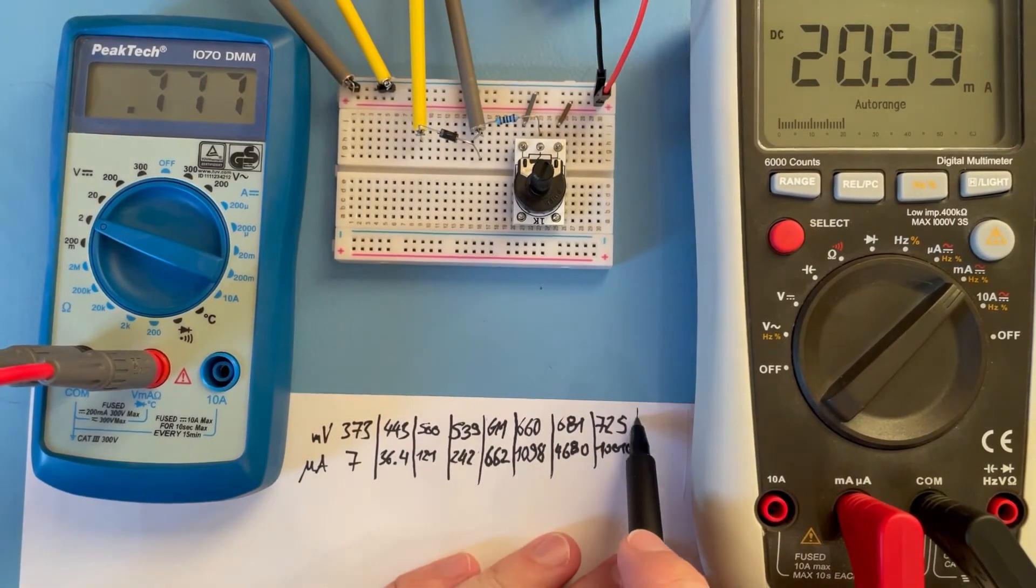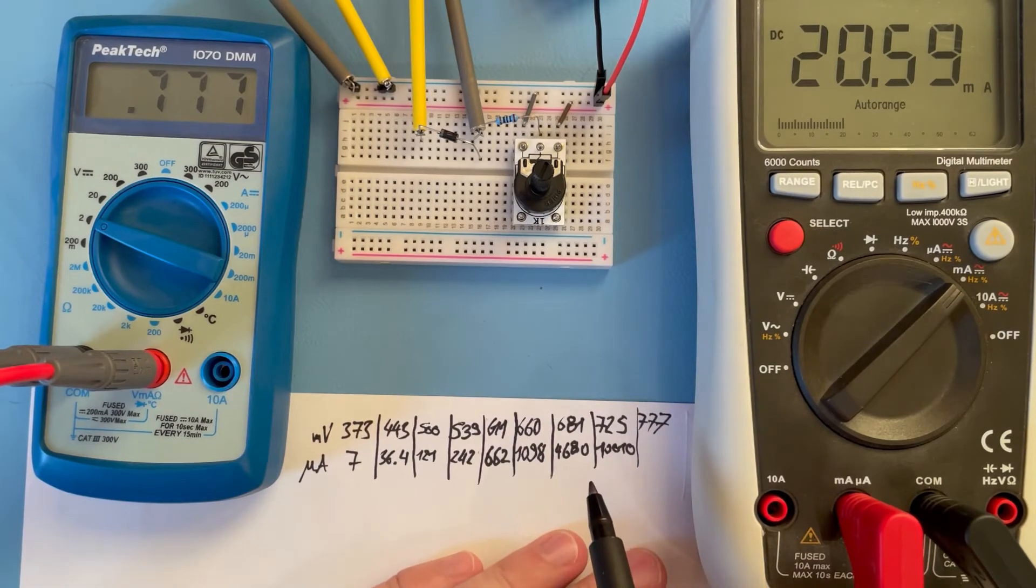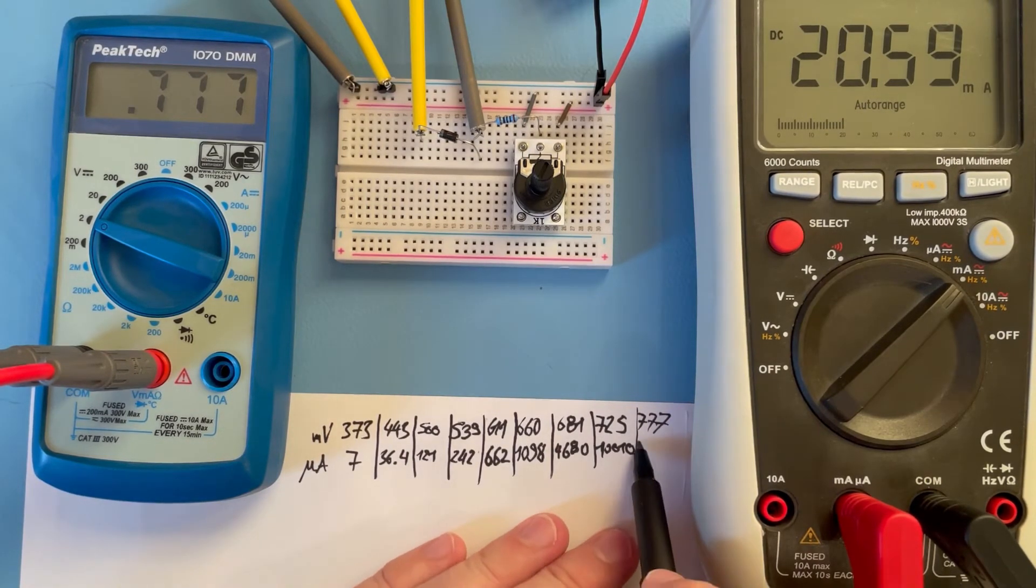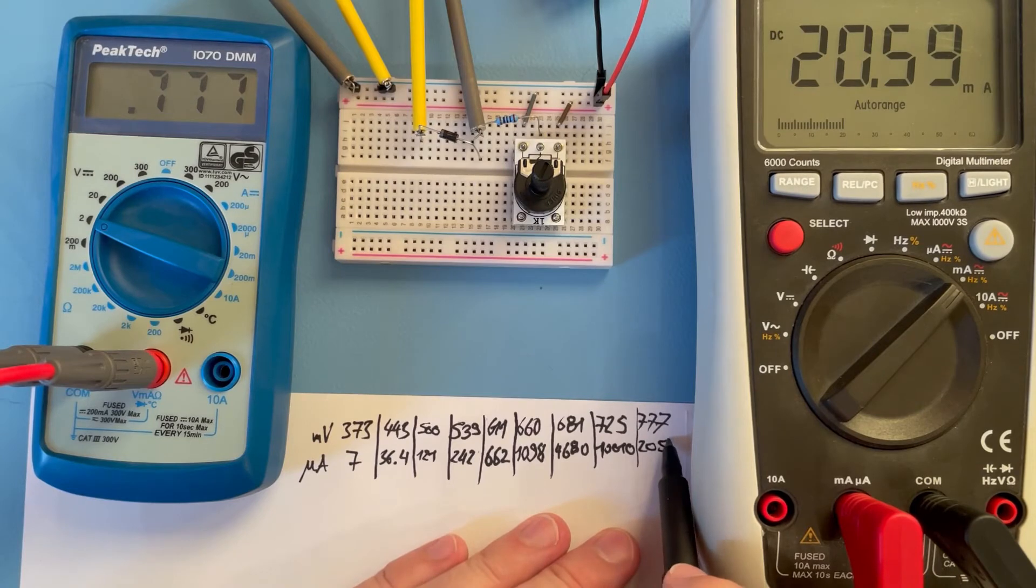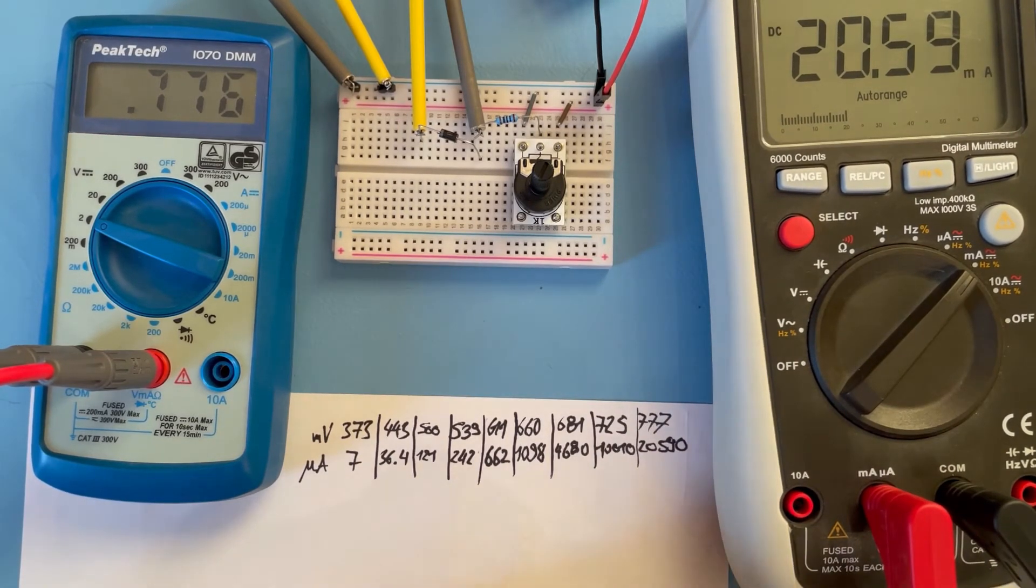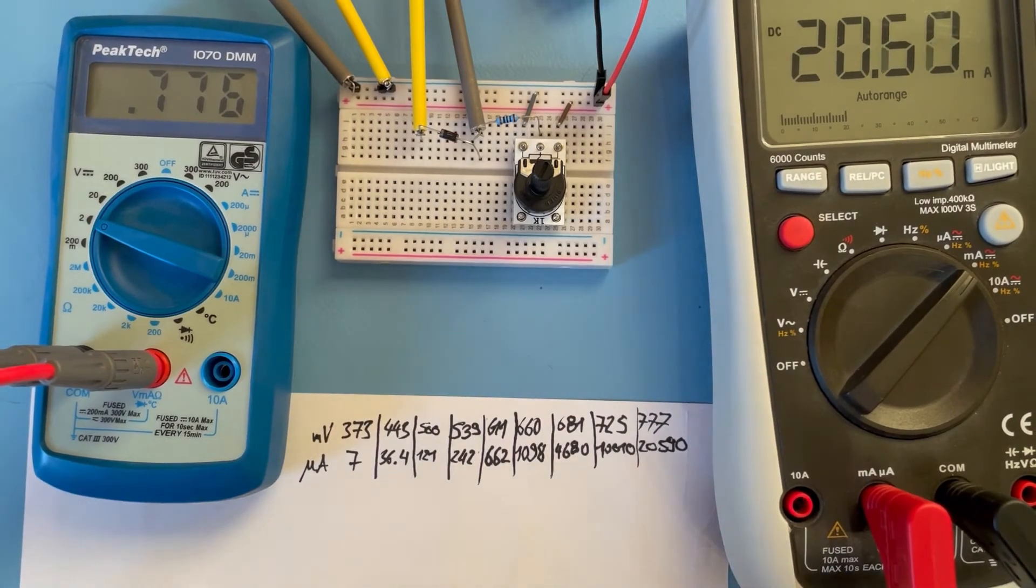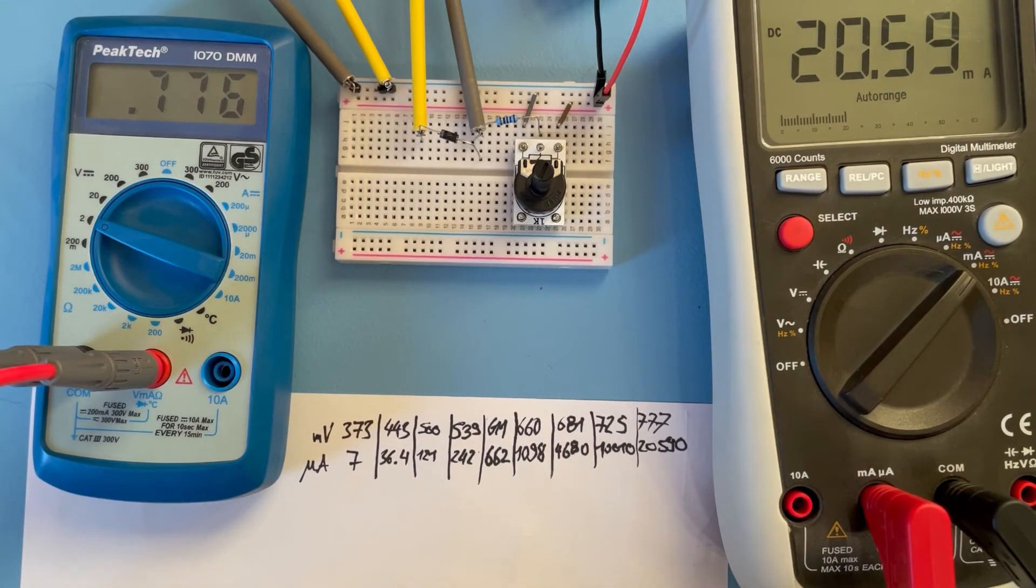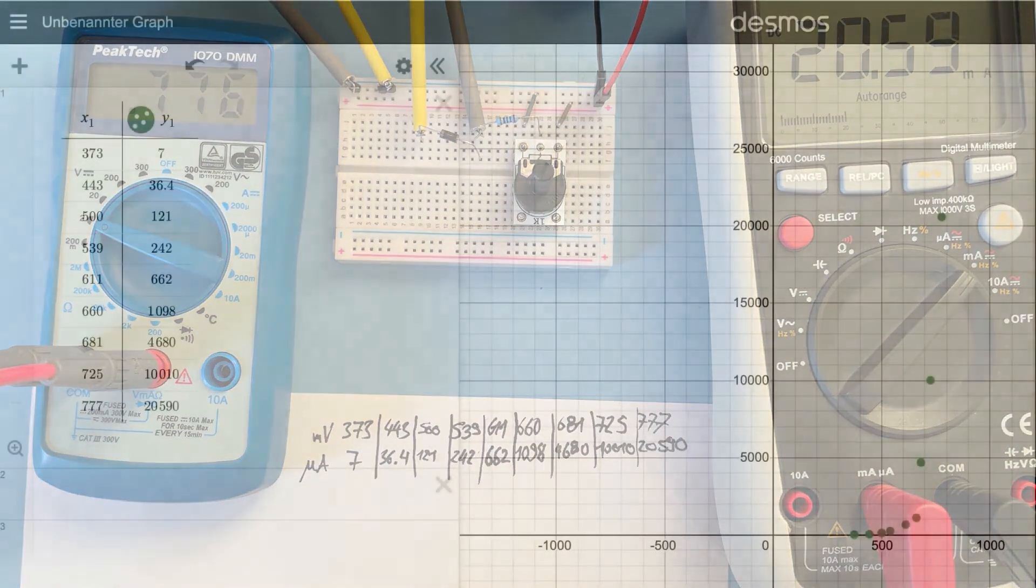So perhaps we write this last value: 777 millivolts and we have 20,590 microampere. Okay, that's the measuring session. Now we can take these values into the computer and see what kind of graph this results in.